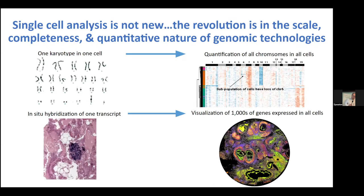Single-cell analysis is really not new. We've been looking at single cells and chromosomes for decades—probably before I was born. For example, the upper left shows chromosomes from one of my white blood cells dropped on a glass slide; you literally look at them and look at banding patterns. With next-generation sequencing you look at every chromosome from every cell. I've shown a modern karyotype using coverage to infer gains or losses. Single-molecule RNA-seq has already been done clinically. The lower left shows in situ hybridization of one probe against one viral transcript. Now you can do that concept across tens of thousands of transcripts simultaneously.